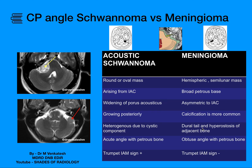Another difference is dural tail and hyperostosis of adjacent bone. We usually see a dural tail with meningioma but not with CP angle schwannoma. And schwannoma will have acute angulation — there will be an acute angle at the margin. Whereas meningiomas will have an obtuse angle. This is one more difference between acoustic schwannoma and meningioma.